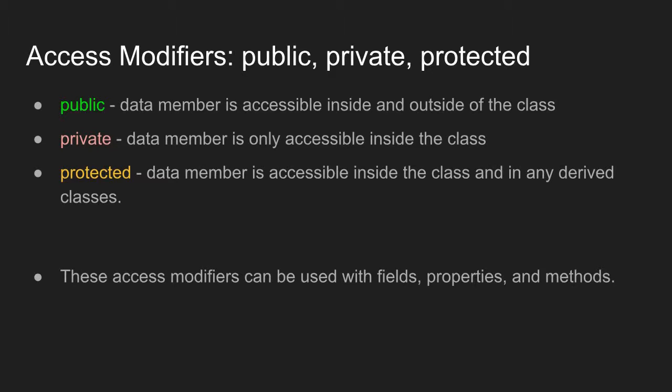The public access modifier means that the data member is accessible inside and outside of the class. The public modifier is the most open of the access modifiers. The private access modifier means that the data member is only accessible inside the class. The protected modifier means that the data member is accessible inside the class and in any derived classes. So if you have a class with a protected data member and you inherit from that class, you have access to the protected data members.